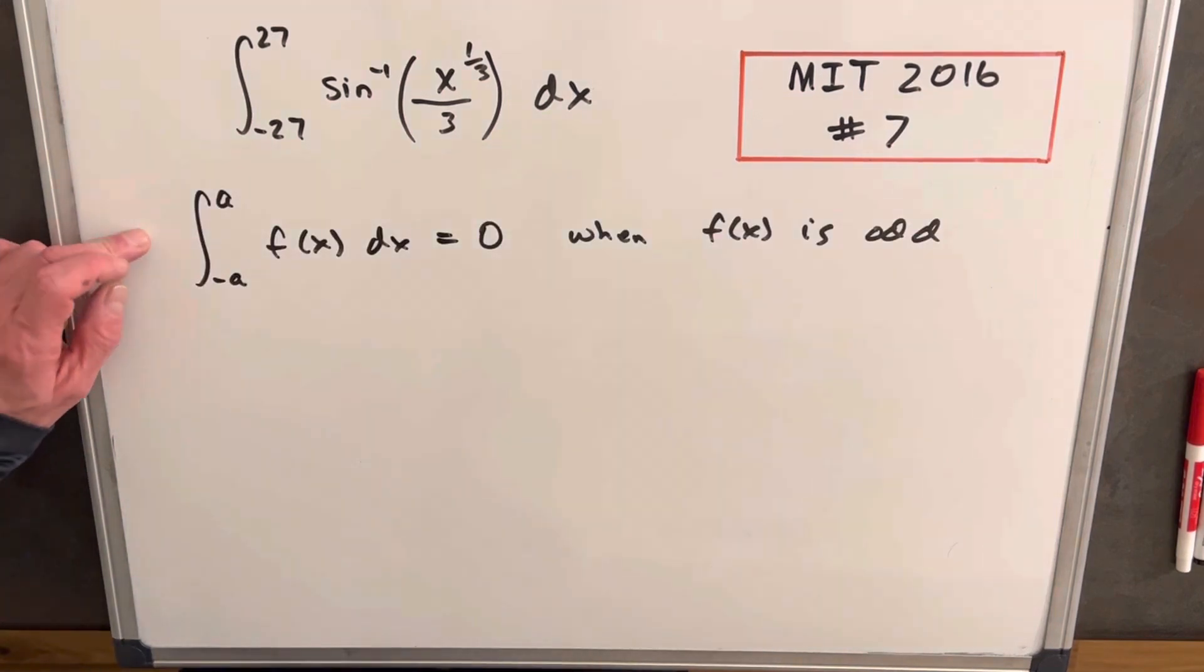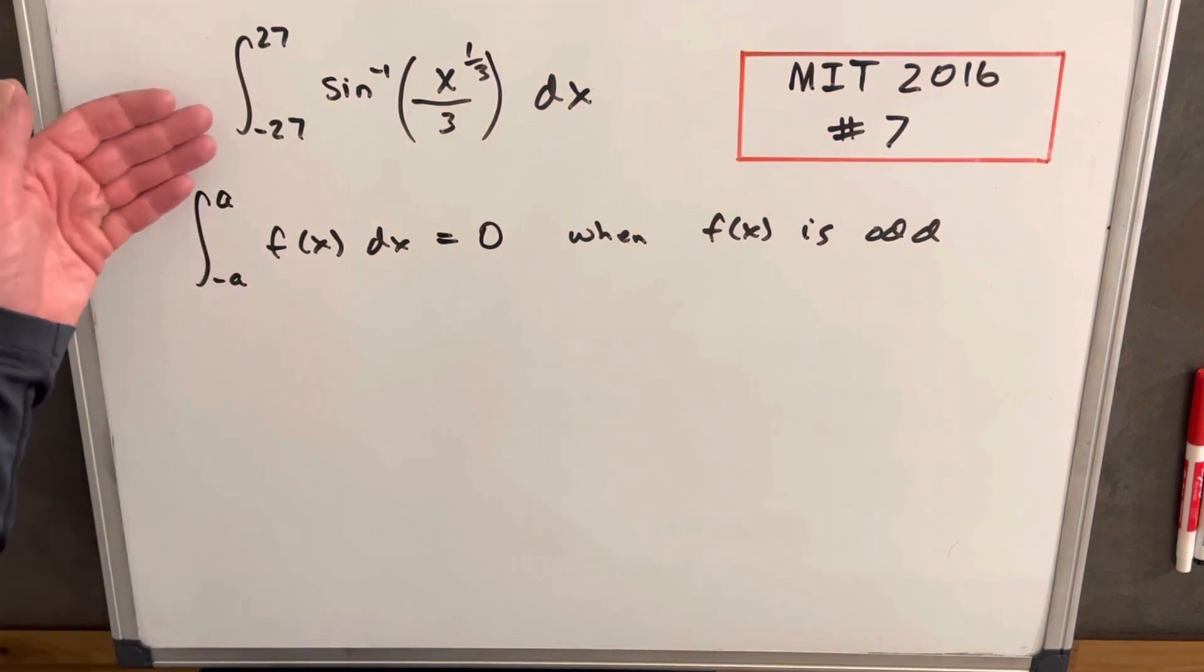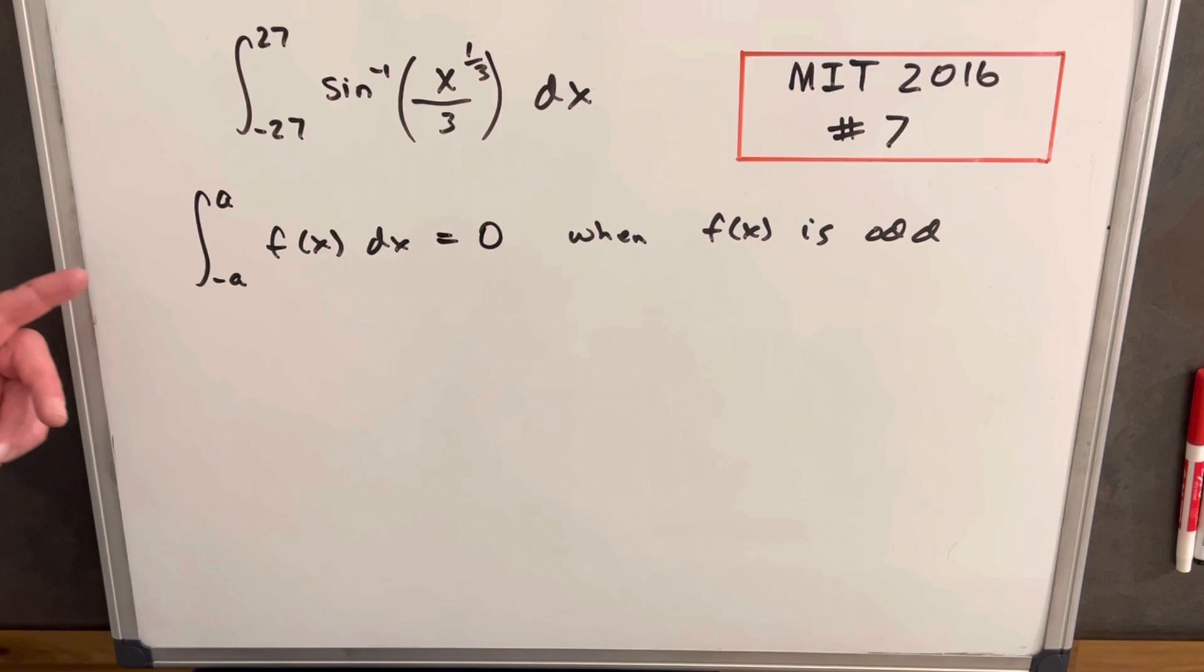This property we have here on the board can be really helpful on a contest problem like this because not only does it give you the answer, but you get the answer in like two seconds. You don't have to spend time on this problem because you can look at it and you know right away it's going to be zero.